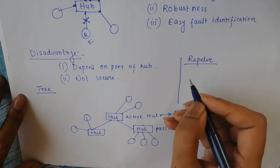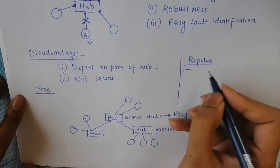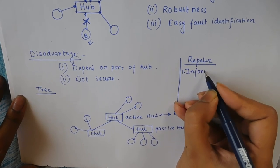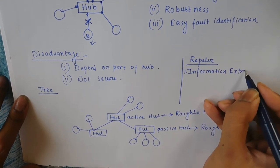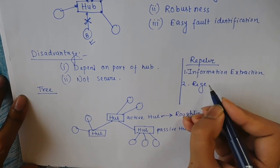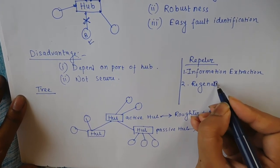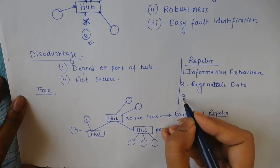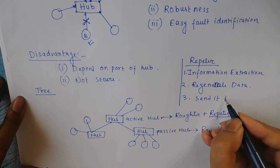A repeater first extracts information from the digital signal, then regenerates data from it, and then sends it to another machine or to the receiver.